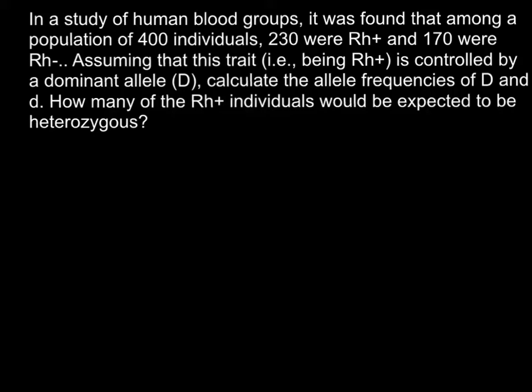Here is the problem. In a study of human blood groups, it was found that among a population of 400 individuals, 230 were Rh-positive and 170 were Rh-negative. Assuming that this trait, being Rh-positive, is controlled by a dominant allele D, calculate the allele frequencies of capital D and small d. How many of the Rh-positive individuals would be expected to be heterozygous?